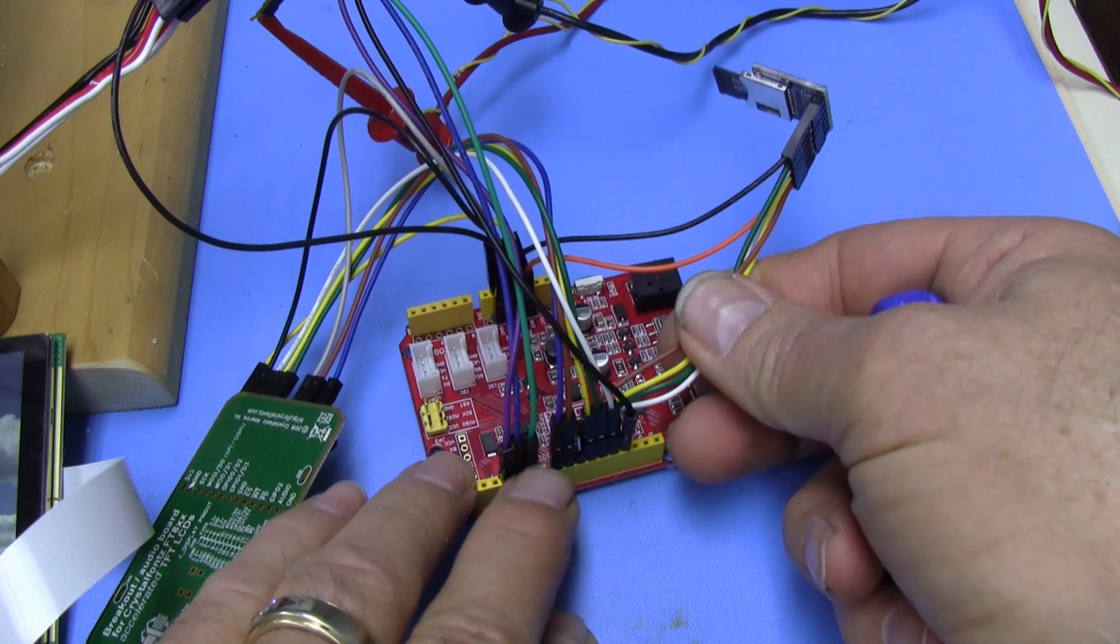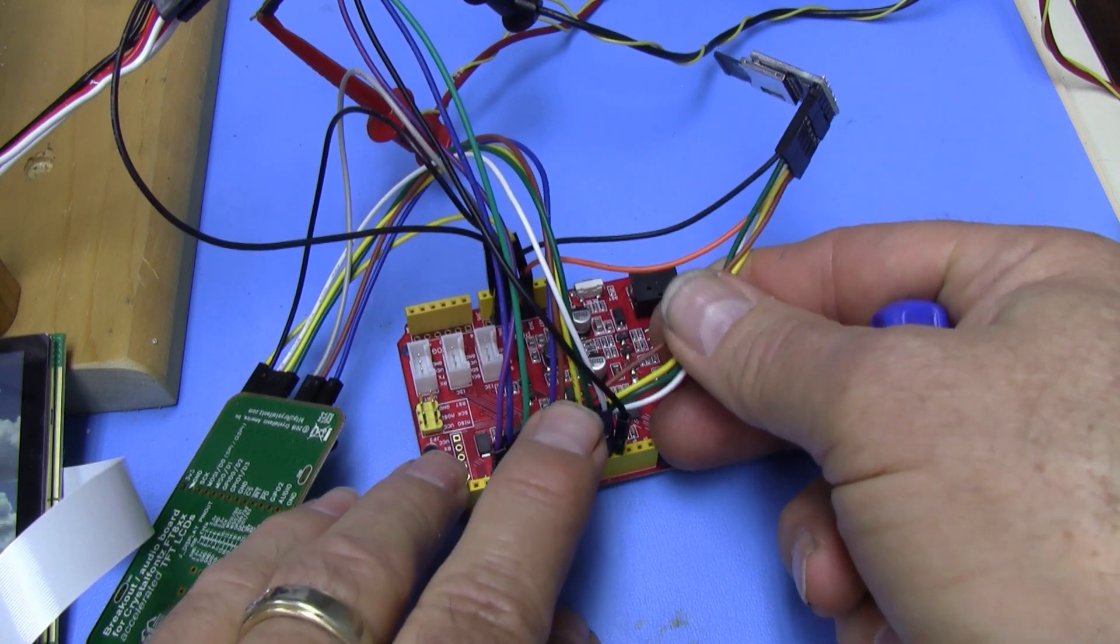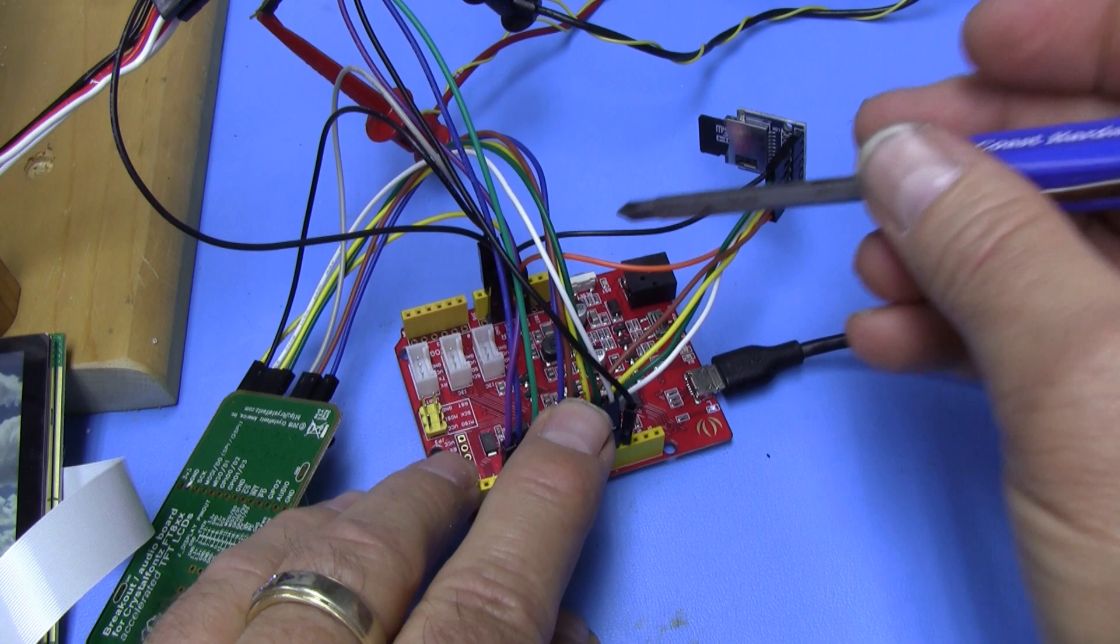And so it's hooked up with SPI. Just data in, data out, MOSI MISO, clock, and chip select, and 3.3 volts, orange and ground.